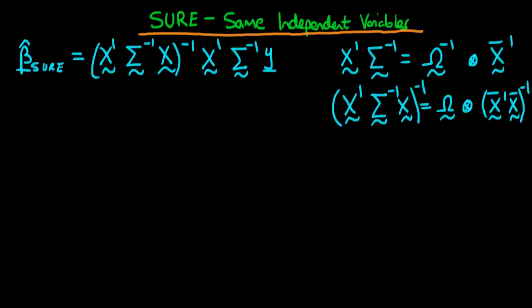In this video I want to continue our discussion of SURE systems when each of the individuals in our system has the same independent variables. At the end of the last video we derived these two results on the right here, and in this video we're going to put them together to help us derive a nice succinct expression for beta hat SURE under these circumstances.